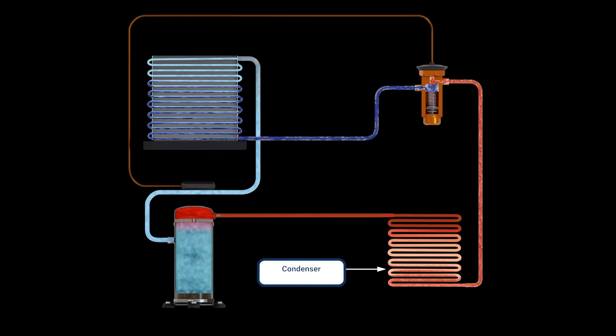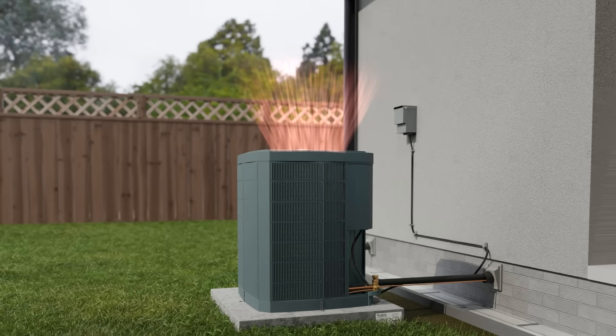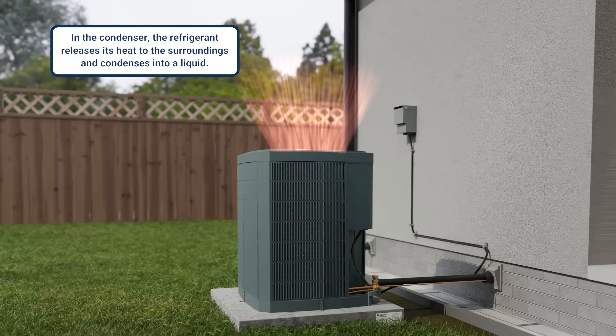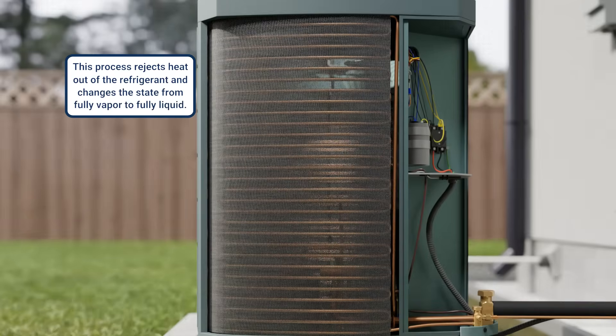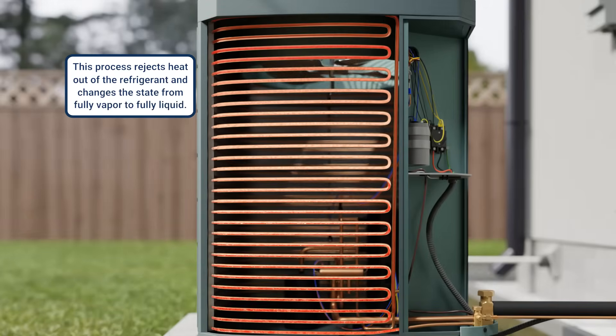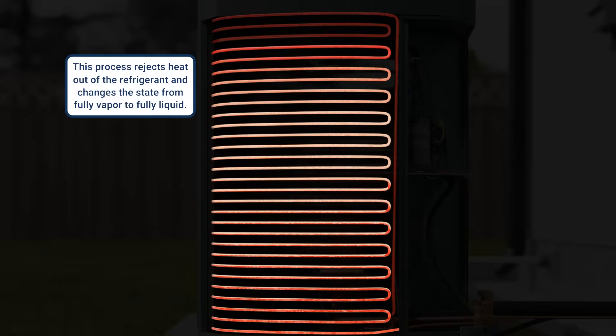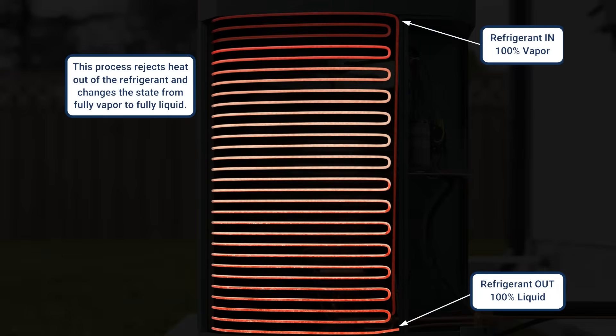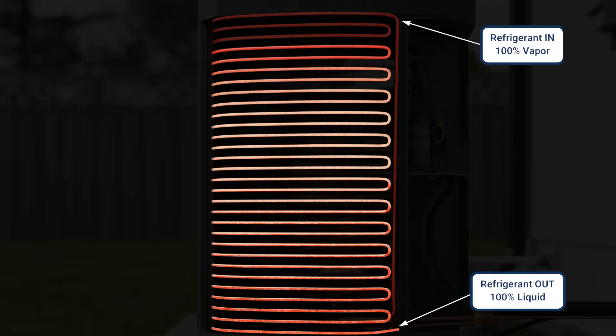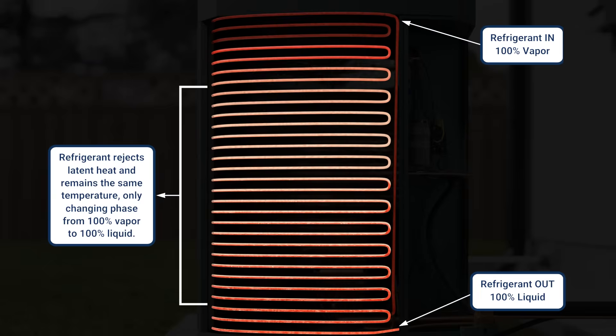This is where the condenser comes in. In the condenser, the refrigerant releases its heat to the surroundings and condenses into a liquid. This process rejects heat out of the refrigerant and changes the state from fully vapor to fully liquid. Think of the condenser as the heat rejector.